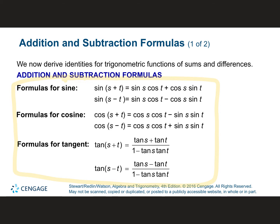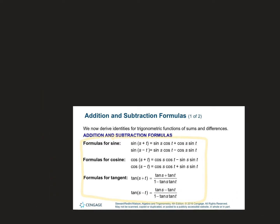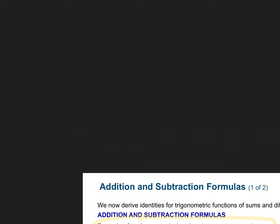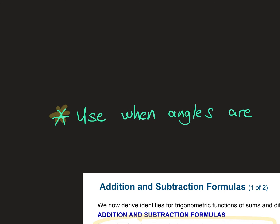There are three different sum and difference formulas — one for sine, cosine, and tangent. They're going to say to you, what is the sine of this angle? What is the cosine of this one? There are some specific things you need to know. You use these formulas when the angles they ask for are not on the unit circle.